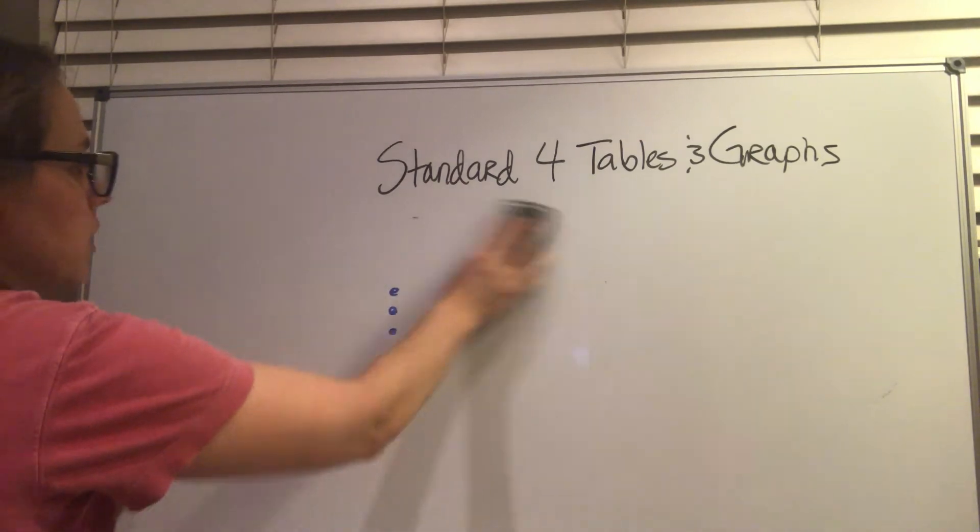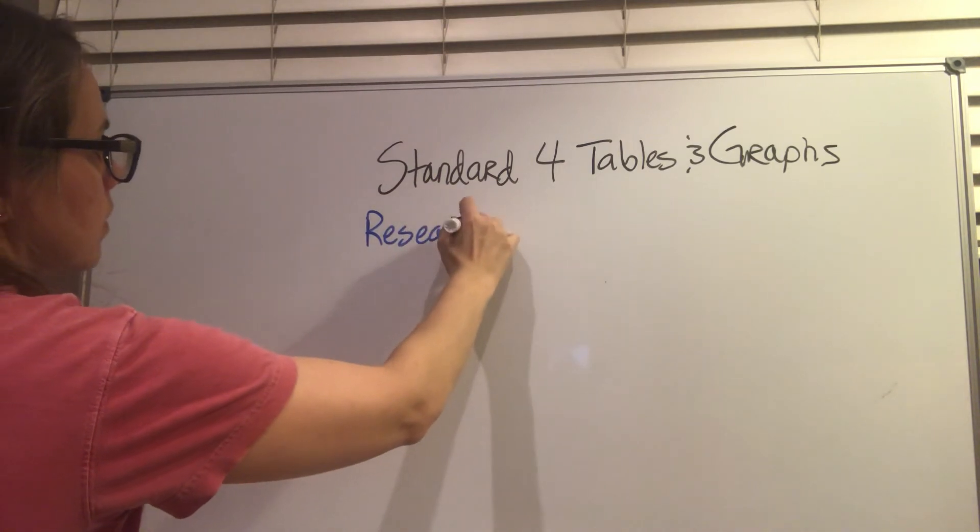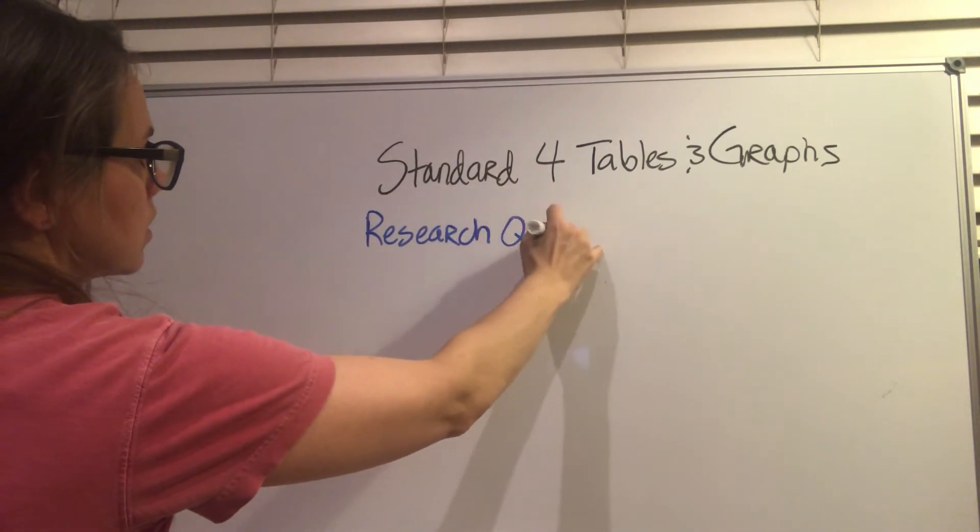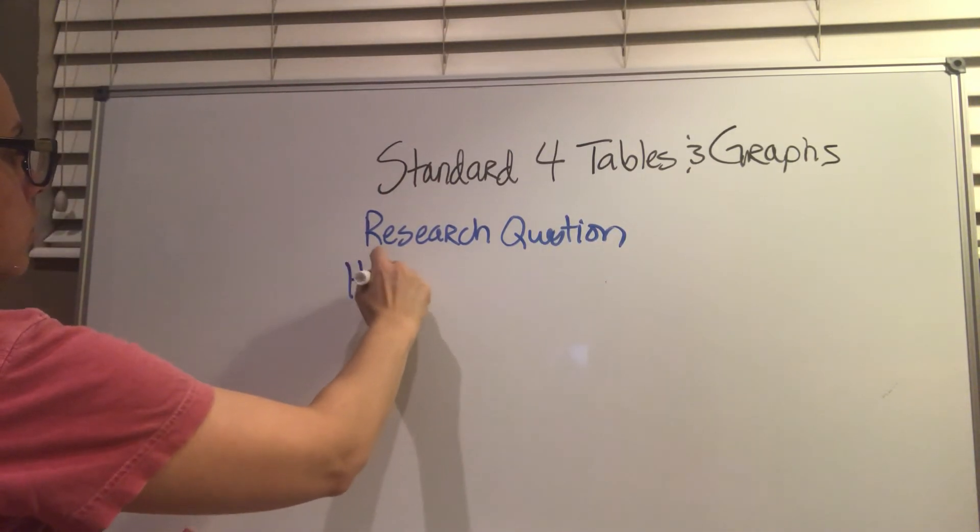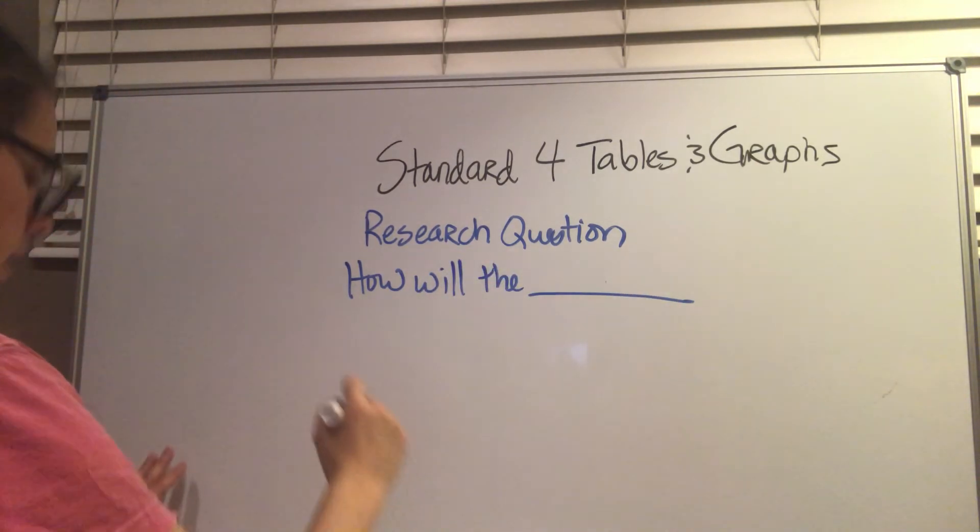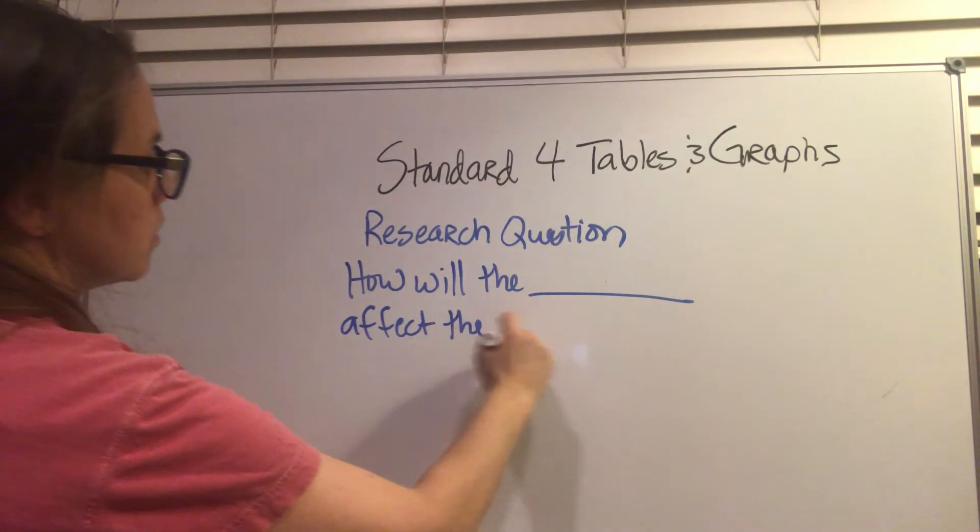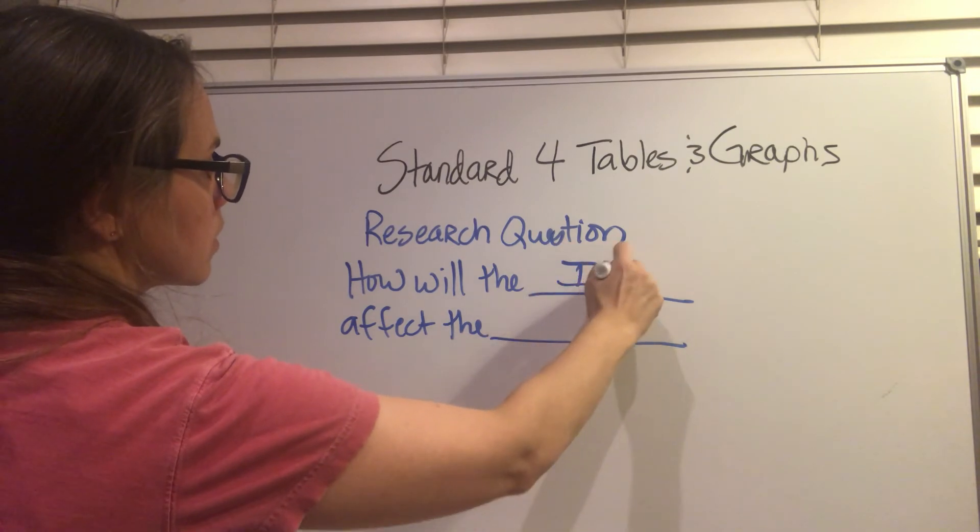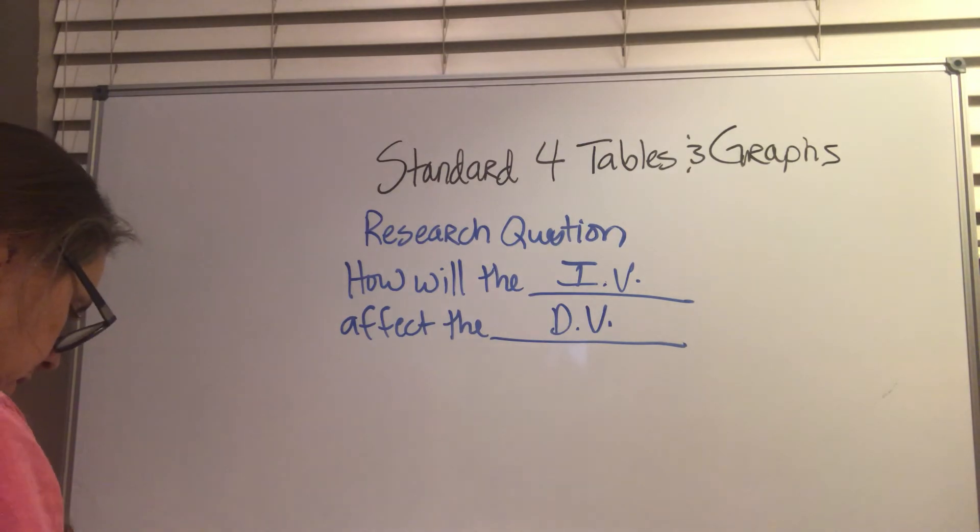The research question is something that's come up a few times on some of the labs we've done. And that's just, again, has to do with the independent variable. The research question is usually how will the independent variable affect the dependent variable. So if we get this independent and dependent variable stuff down, then we'll be able to do this every time.